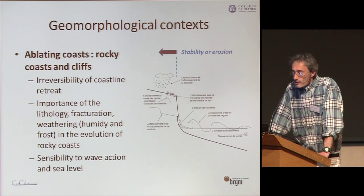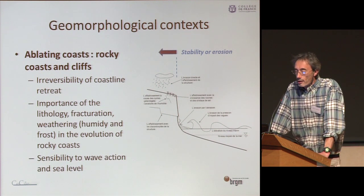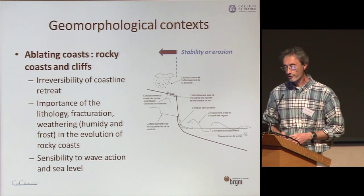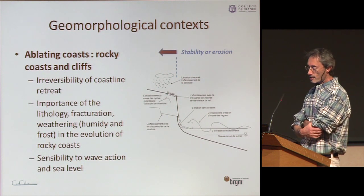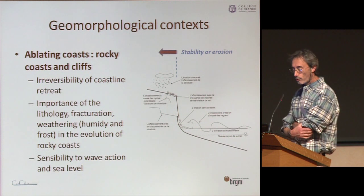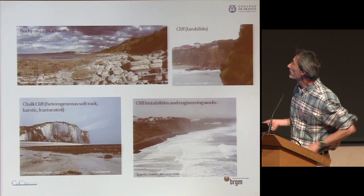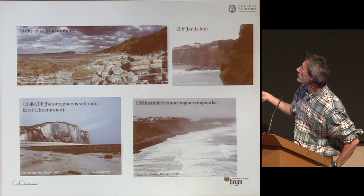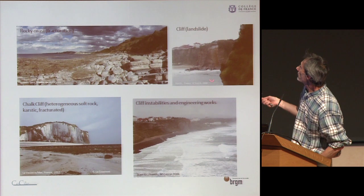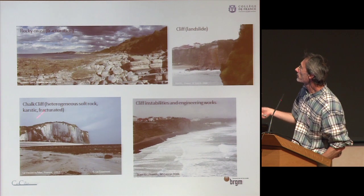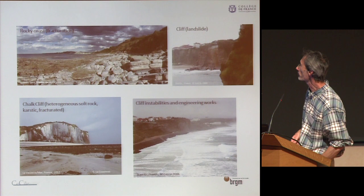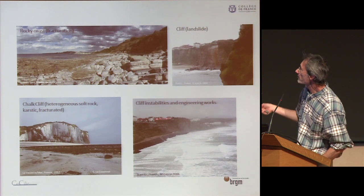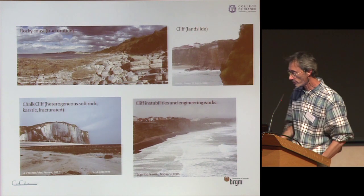Regarding ablating coasts — mainly rocky coasts and cliffs — we note the irreversibility of coastline retreat and the importance of lithology, fracturing, weathering, humidity, and frost in the evolution of rocky coasts. These coasts are generally very sensitive to wave action and sea level. Examples shown include the Côte Basque with hard fractured rocks and landslides, heterogeneous substrate cliffs with karstic features and high instabilities, and engineering works in Biarritz.